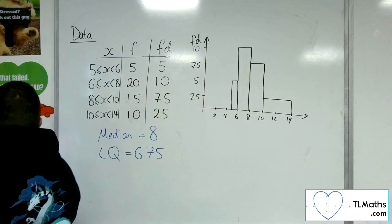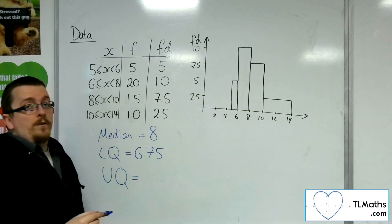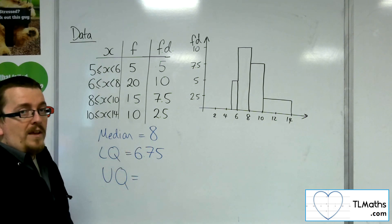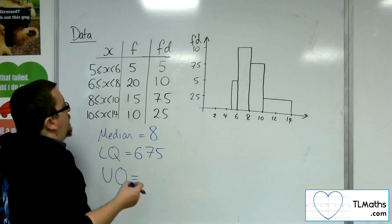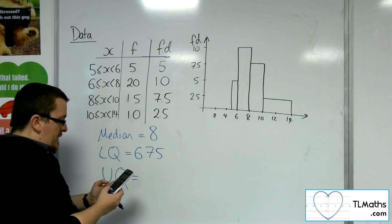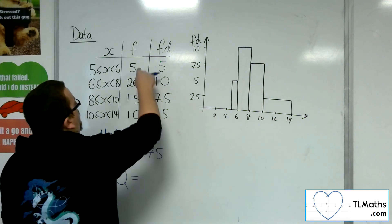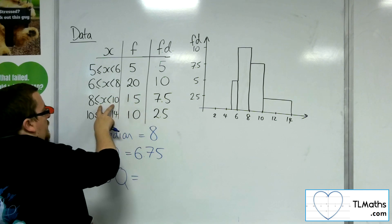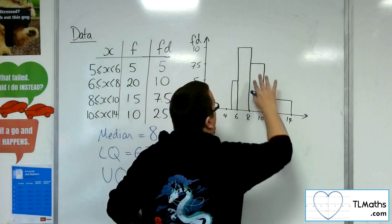So let's find the upper quartile in a similar method. Now, if the median hadn't been at the end of a grouping, then you would have done the same method to find the median. So we've got 50 divided by 4 times by 3. So we're looking for the 37.5th value. So we've gone through 5, 25, and then we get to 40. So the 37.5th value is between the 8 and 10 grouping. So it's somewhere in here.